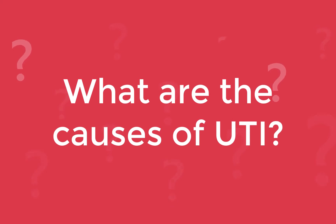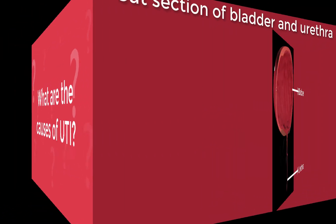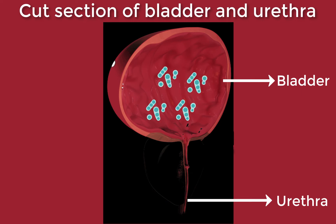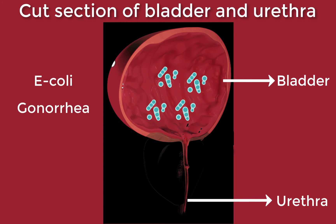So what are the causes of UTI? Urinary tract infections typically occur when bacteria enter the urinary tract through the urethra and begin to multiply in the bladder. Bacteria may take hold and grow into a full-blown infection in the urinary tract. UTI is usually caused by E. coli. However, sometimes other bacteria can also be responsible, such as gonorrhea, chlamydia, and mycoplasma.